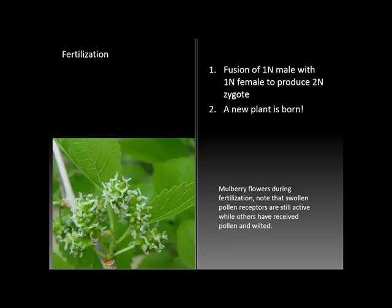Fertilization is the fusion of a haploid male cell with a haploid female cell to produce the diploid zygote — the product of fertilization that has the diploid number of chromosomes and marks the beginning of a new plant. This interesting photo shows flowers of the mulberry tree during fertilization. You can note that the pollen receptors quickly wilt once fertilization has taken place, while other flowers are still showing their receptivity to pollen grains.